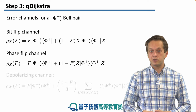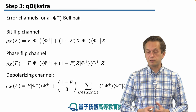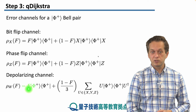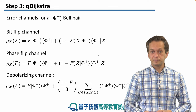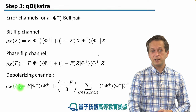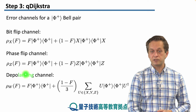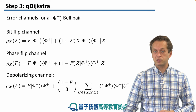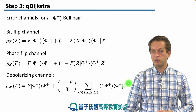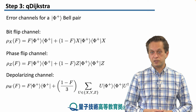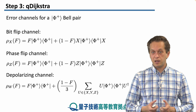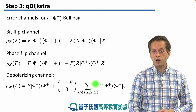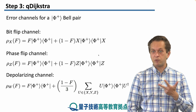We might also consider a more general state going through a depolarizing channel, denoted with a W for Werner states. Again we have the same parameter f giving the fidelity of the state, but this time we sum over all possible errors given by unitaries — the Pauli matrices X, Y, and Z — each applied with probability (1 minus f) over 3, because now we have three errors.